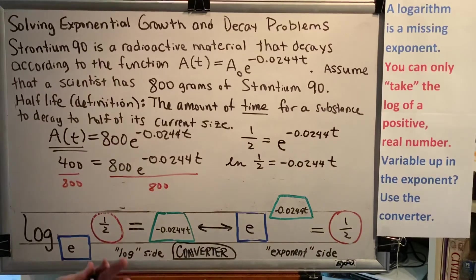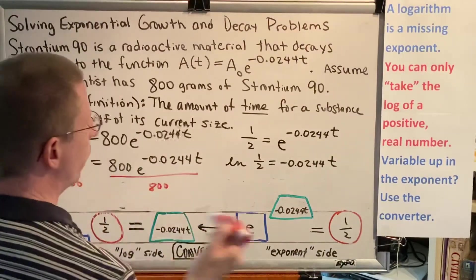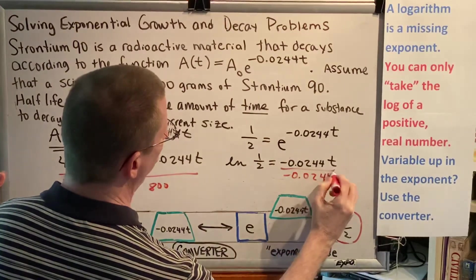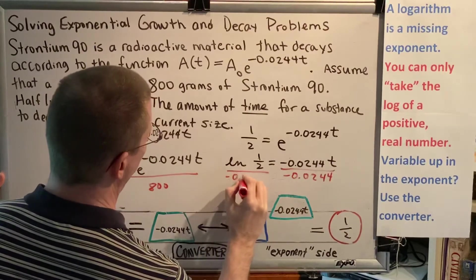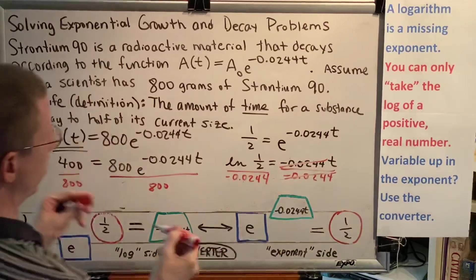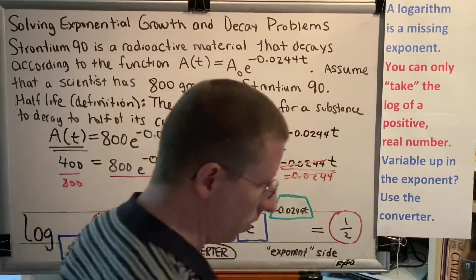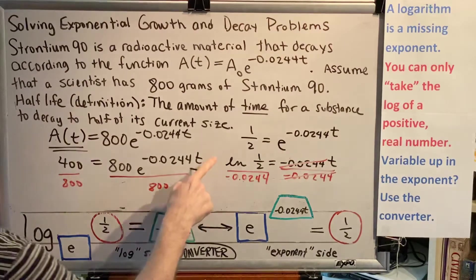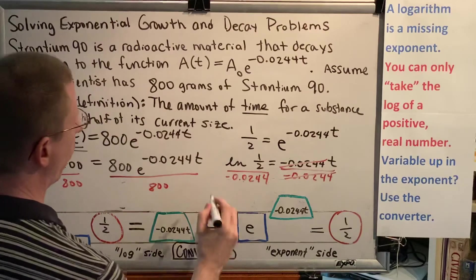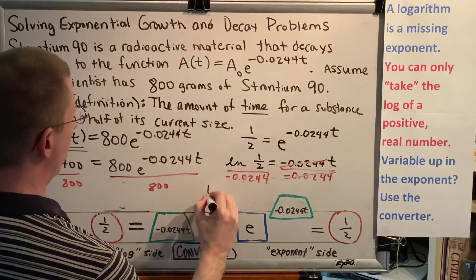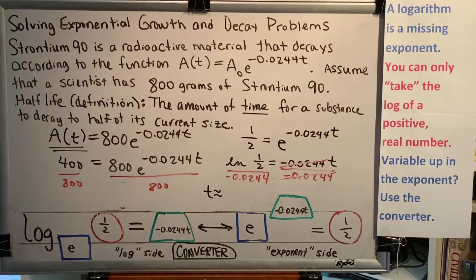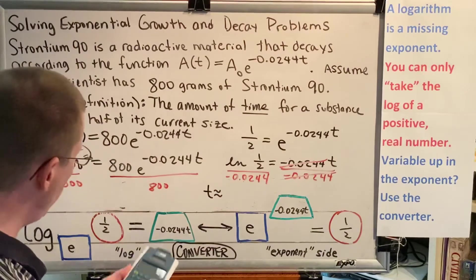Remember, I'm trying to solve for t. So let's divide both sides by negative 0.0244. t is exactly equal to the natural log of one half, all divided by negative 0.0244. But we would like to know a time that makes a little more sense to us, something that is a decimal approximation. So we pick up our calculators.